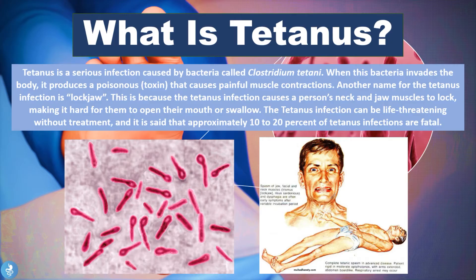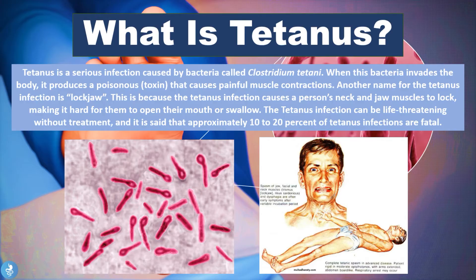The tetanus infection can be life-threatening without treatment, and it is said that approximately 10 to 20 percent of tetanus infections are fatal. Something very interesting about this bacteria is that when it invades the body, it releases a poisonous toxin that affects the central nervous system quite severely, causing painful muscle contractions specifically in the neck and jaw region, and this is why it is also given the name locked jaw or trismus.